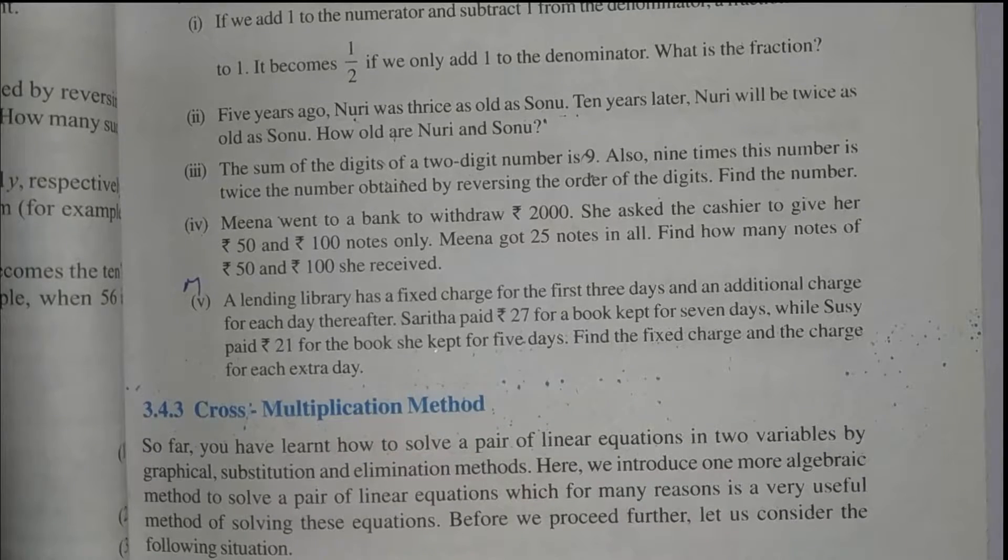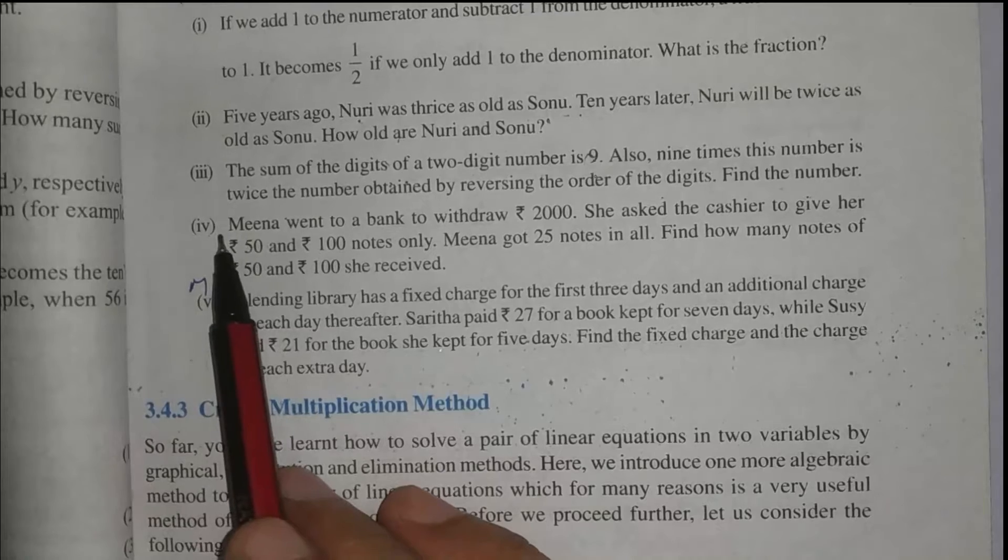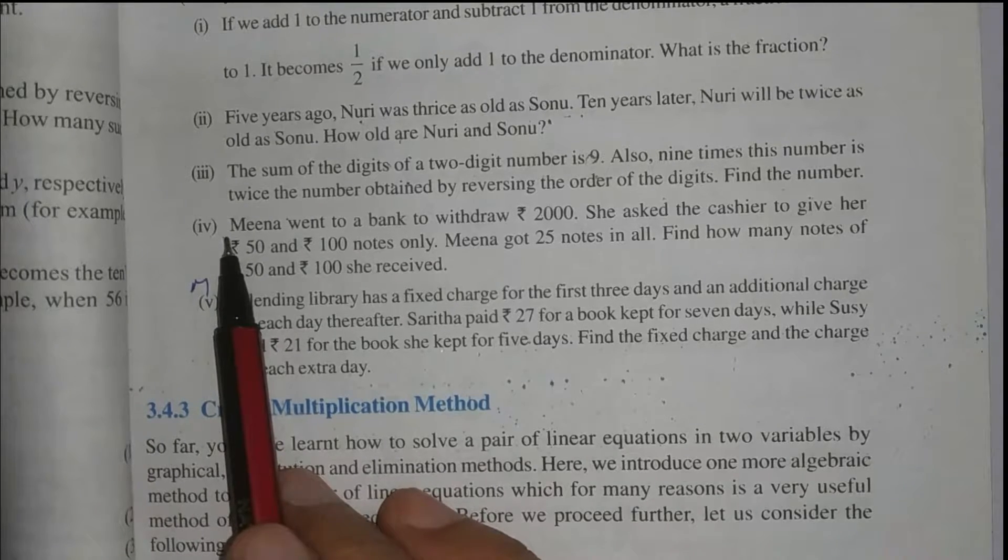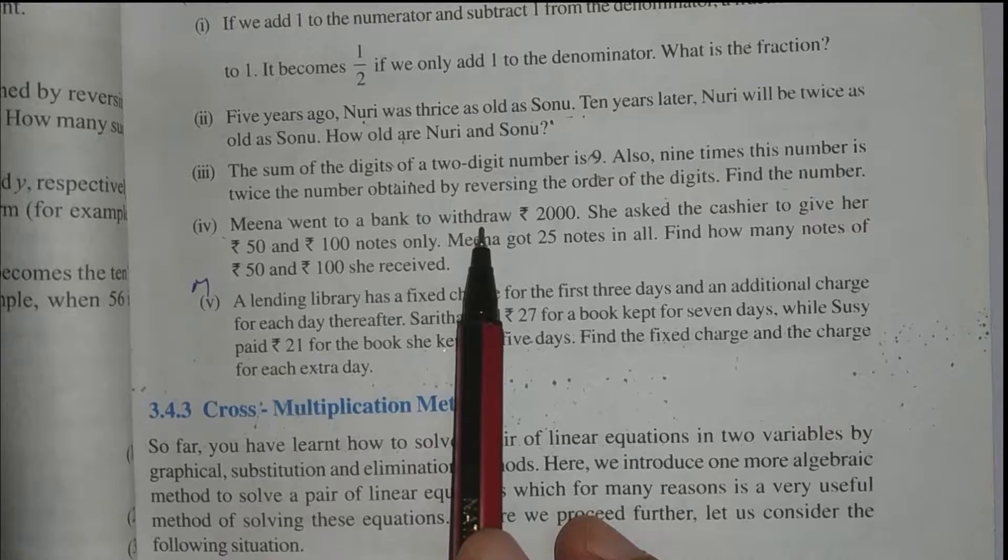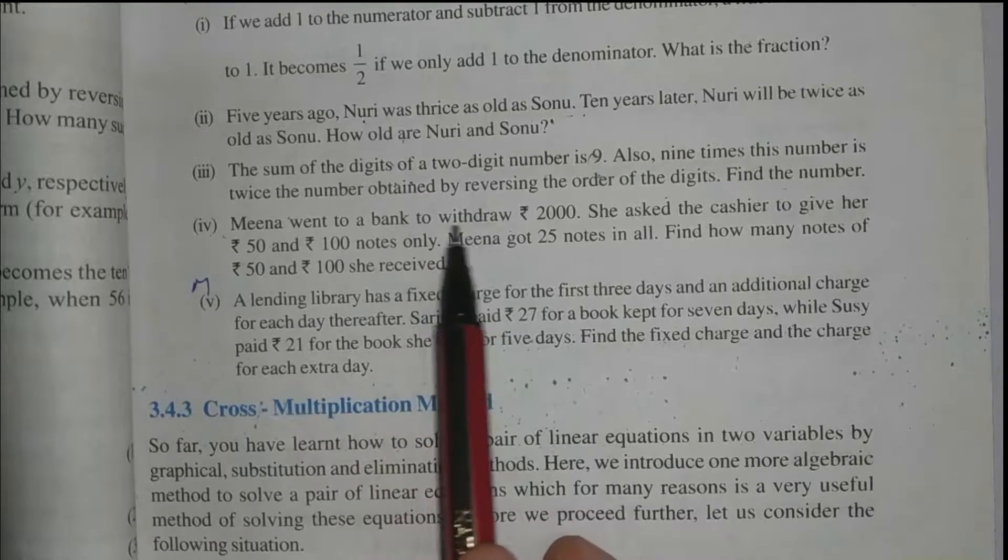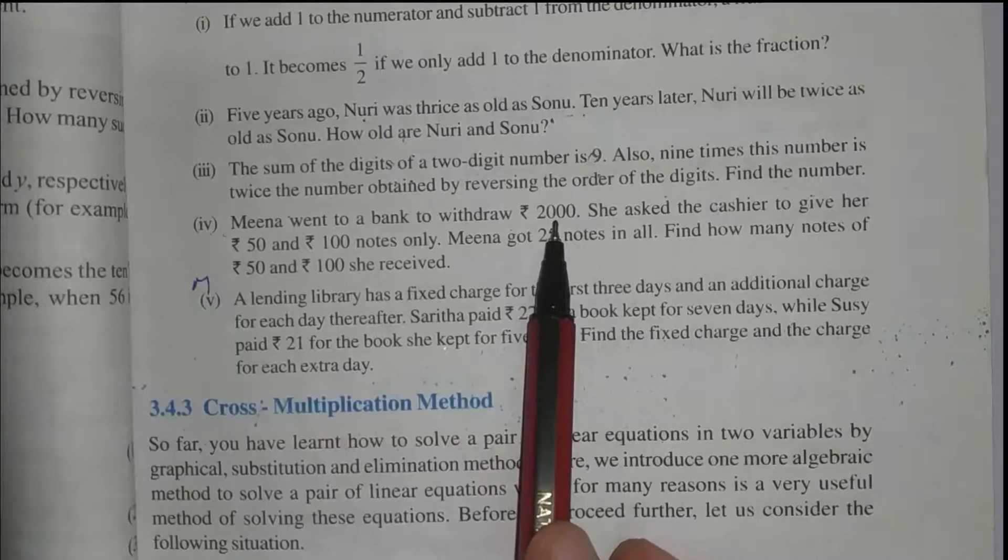Let's read the next statement. Meena went to a bank, fourth part. We are doing question number two, fourth part. Meena went to a bank to withdraw. Withdraw means paisa nikaalna. Meena a bank gai hai. Kya karne gai hai? Paisa nikaalne gai hai. Kitne paise nikaalai? 2000 rupees.